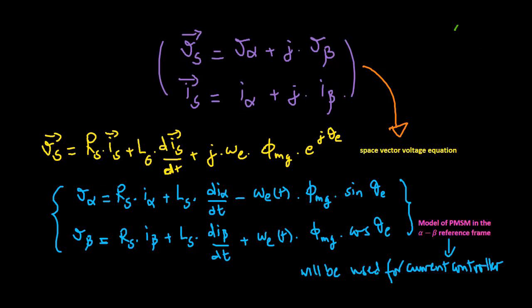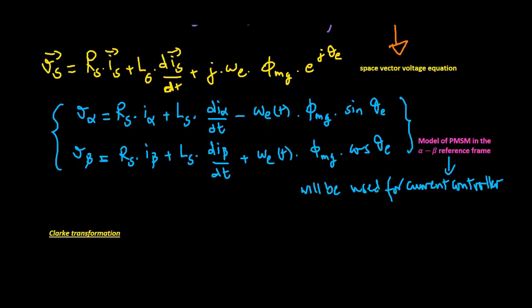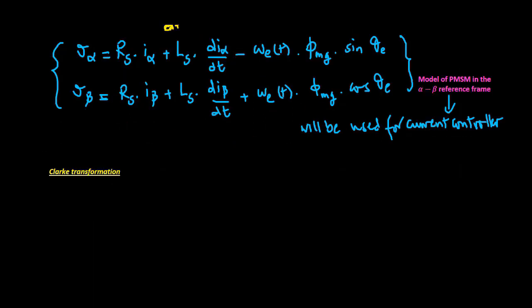This model of PMSM will be used in future videos for a current controller design in the alpha-beta reference frame. The relationship between the current and voltage variables in the alpha-beta reference frame and the original three-phase variables is given by the Clark transformation. Taking the three-phase currents as an example, the transformation of three-phase variables to their components in the alpha-beta reference frame is achieved by the Clark transformation.